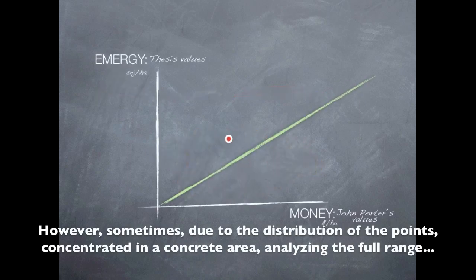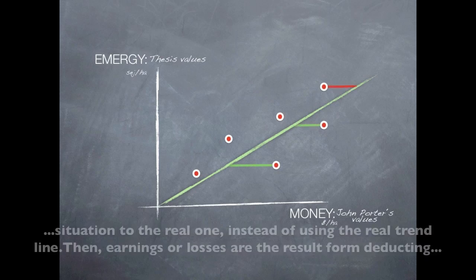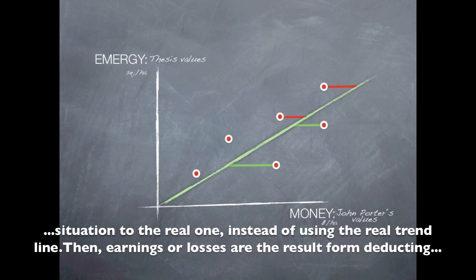However, sometimes due to the distribution of the points, concentrated in a concrete area, analyzing the full range of energy values can be misleading. In this case, the specific points should be used to compare the ideal situation to the real one, instead of using the real trendline.